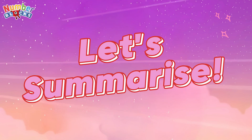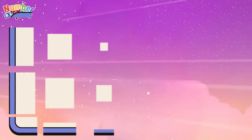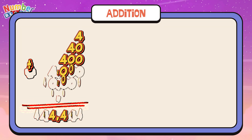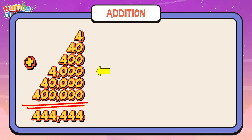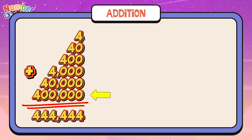Let's summarize! Let's learn addition! Four plus forty plus four hundred plus four thousand plus forty thousand plus four hundred thousand equals four hundred forty-four thousand four hundred and forty-four!